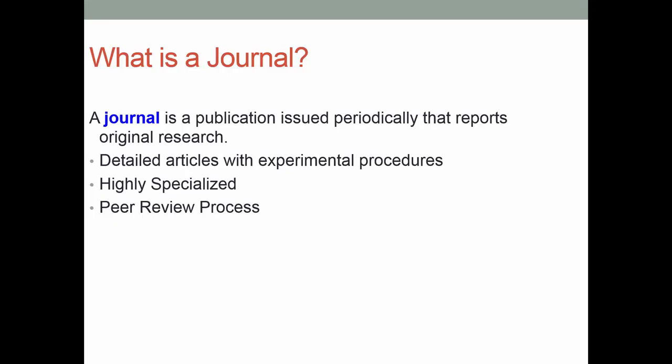What is a journal? A journal is a publication issued periodically that reports original research. It's very important that anything in a journal is original research — you can't repeat what somebody else has done. It includes detailed articles with experimental procedures. A journal article will be highly specialized, really only suited for people who are doing research in that area. And it undergoes the peer review process.